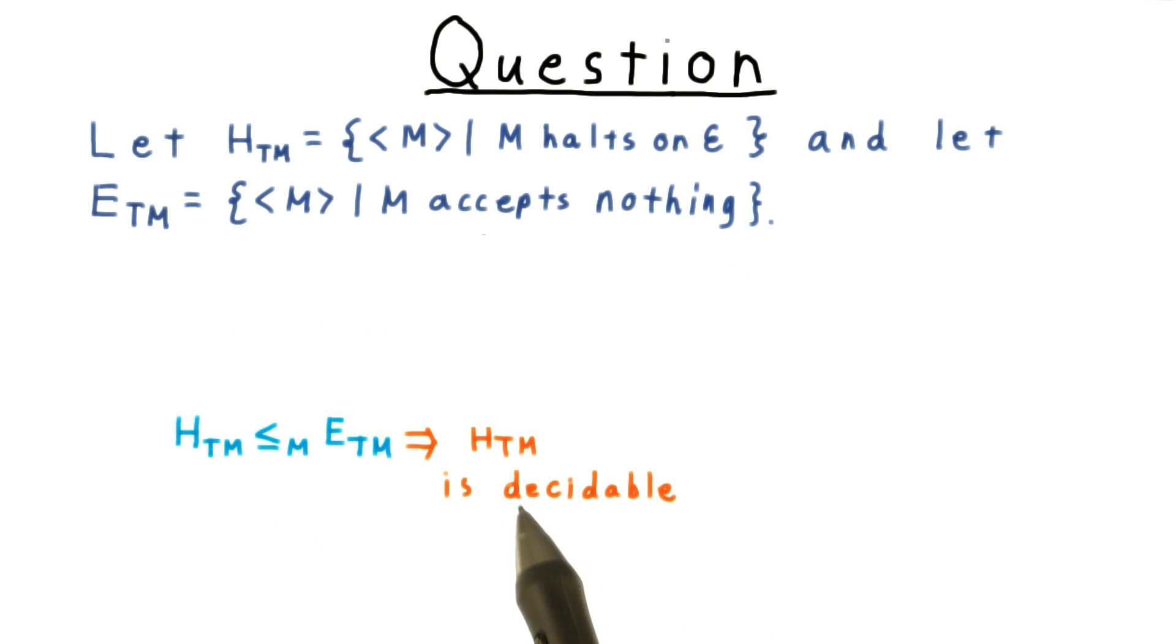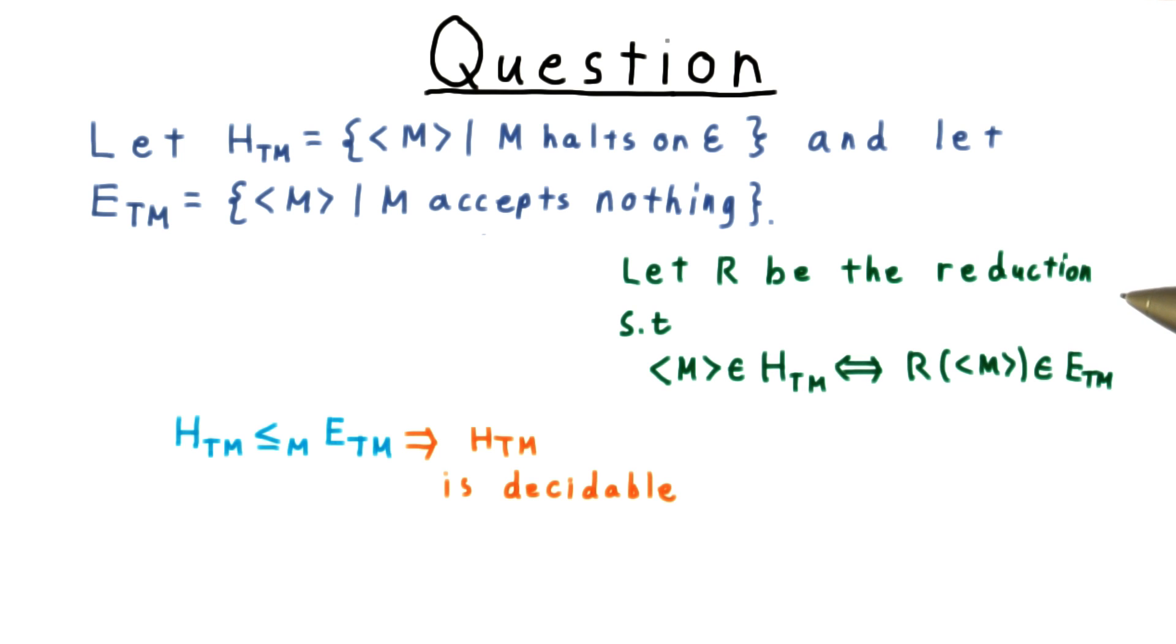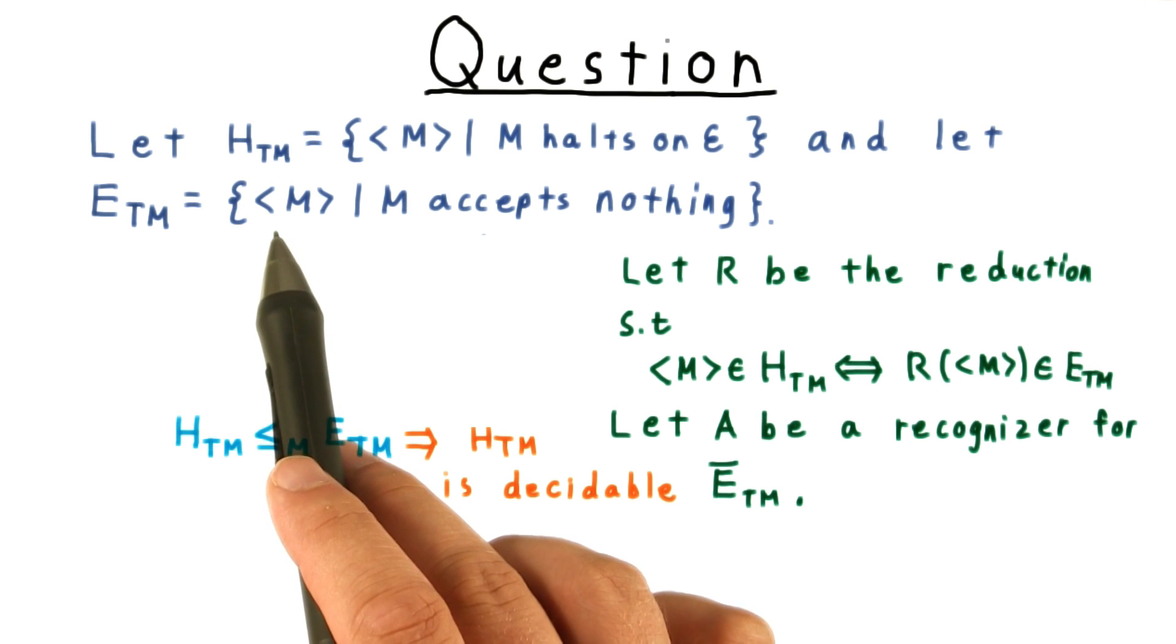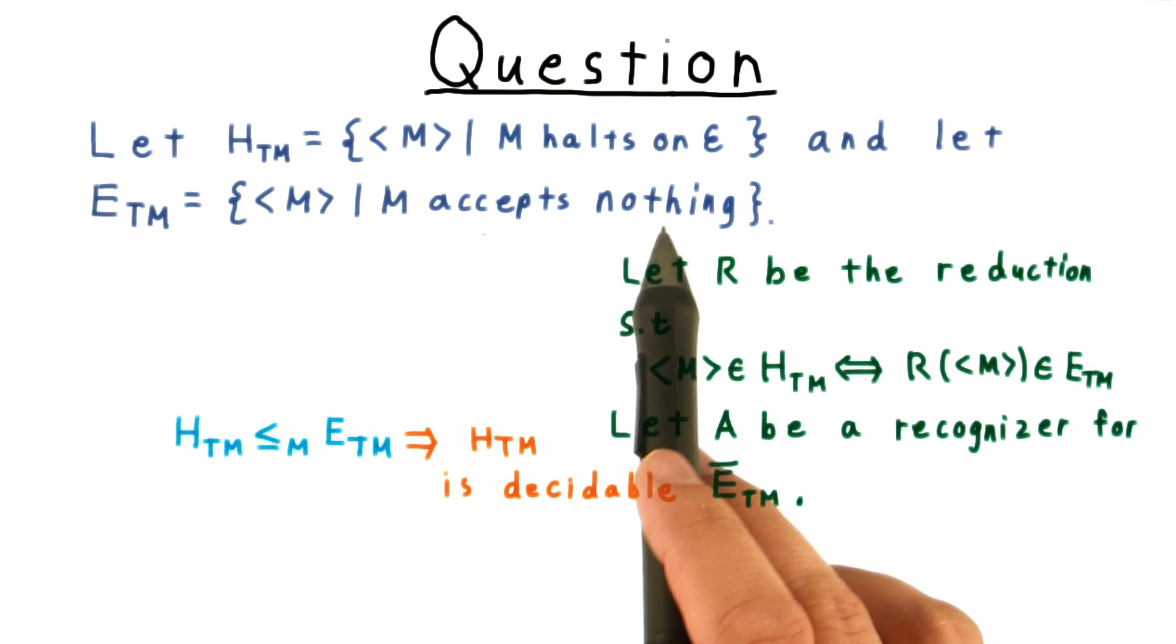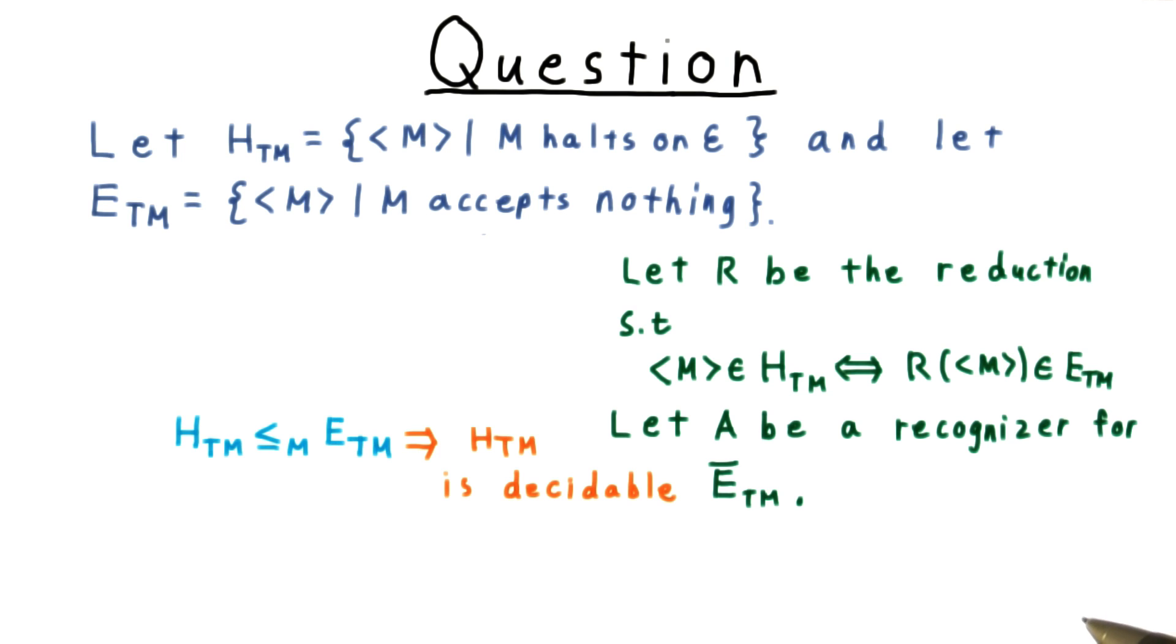Let's erase the rest and focus on this contradiction here. We'll let R be the reduction such that the description of the machine M is in H if and only if R of M is in E. Then we let A be a recognizer for the complement of E_TM. The complement of E is the set of machines that accept something. We talked about how we can recognize this language with the dovetailing strategy before, so assume that A implements that.